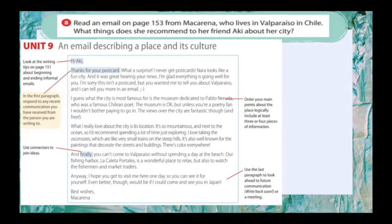We start with our greeting, as always. Now we have. In the first paragraph, respond to any recent communication you have received from the person you are writing to. And we have the expression: Thanks for your postcard. Next one. Order your main points about the place logically. Include at least three or four pieces of information. Here we have two paragraphs with the information. Then, use connectors to join ideas. Guys, by this time that you are in PET, you should know use connectors. So, use as many connectors as you can. Use the last paragraph to look ahead to future communication. Write back soon or a meeting. So, you say goodbye, being a nice person. And at the end, of course, we have best wishes, Macarena.